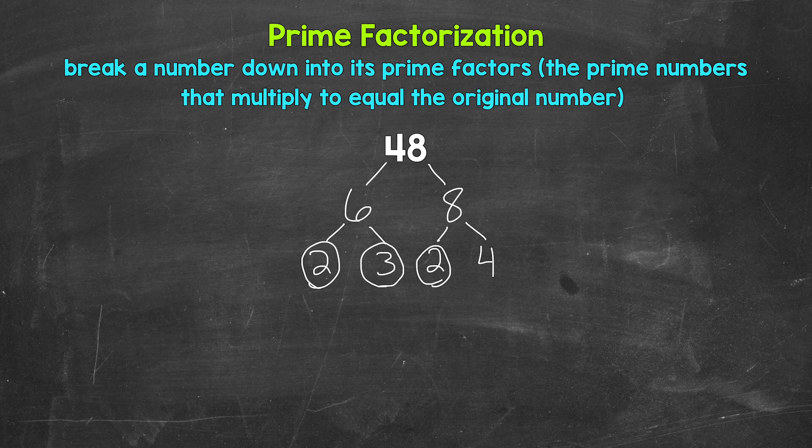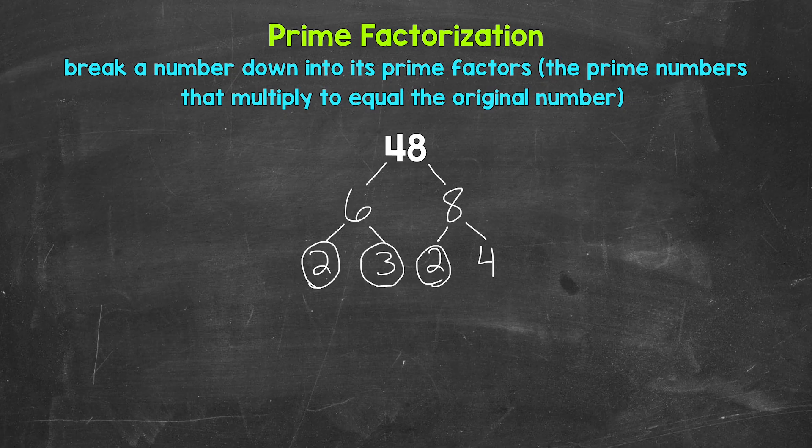As far as 4, we can break 4 down. 4 is a composite number. So as far as factors of 4, 2 times 2 is 4. 2 is a factor of 4. So let's break this down to 2 and 2. 2 is prime, so we are done here and here.